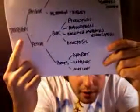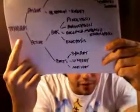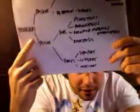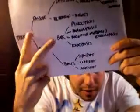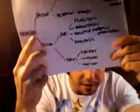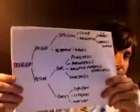So here we have cellular transport, and that's divided into two main branches that we learned about in class. The first is passive transport, the second is active. Those are the two main divisions that you're going to want to think about. Now of course all these things, as you can see from my diagram, can be further subdivided.